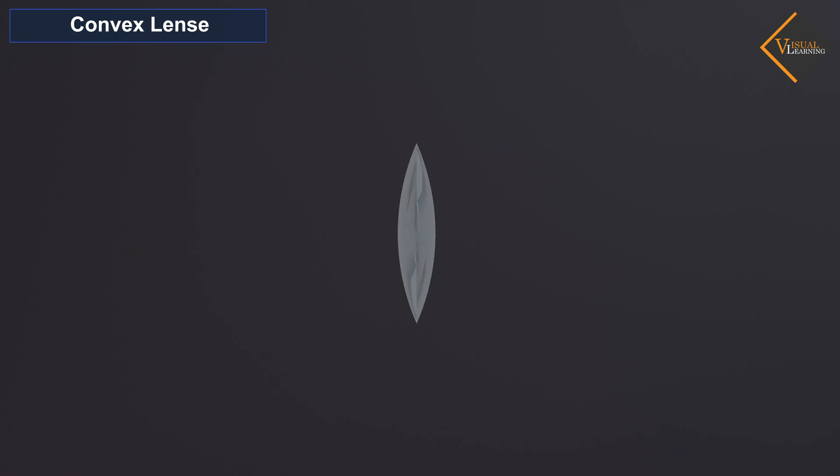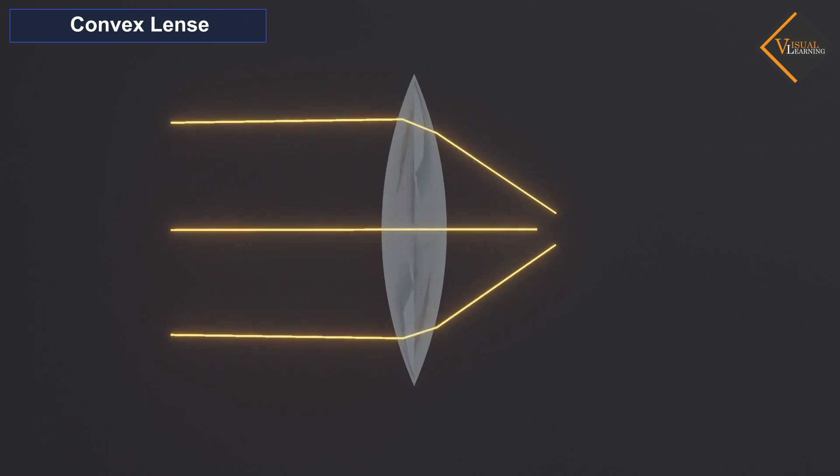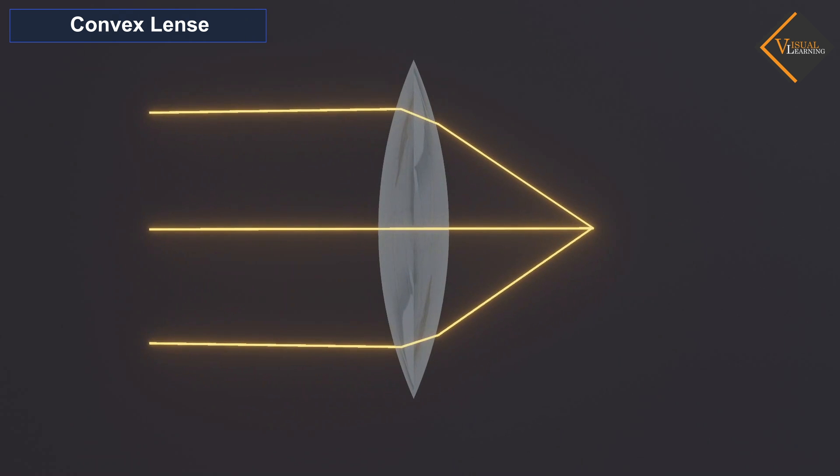Convex or convergent lenses. A convex lens is thicker in the middle and thinner at the edges. A convex lens is also known as a biconvex lens because of two spherical surfaces bulging outwards.